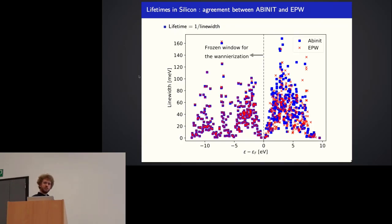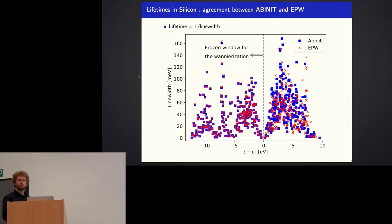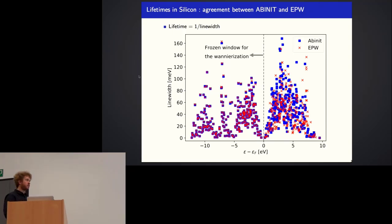In the valence band, the agreement between EPW and Abinit is very good. It's not the case in the conduction band because with EPW I included only the valence bands inside the frozen window for the Wannierization. In the conduction band, the energies before and after the Wannierization can change, and that leads to discrepancies in the linewidth between the two codes.